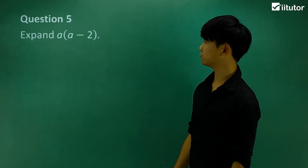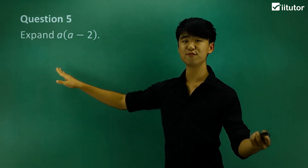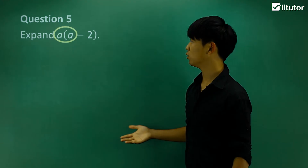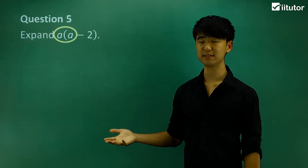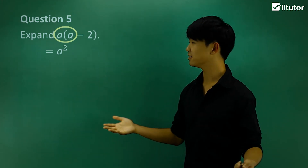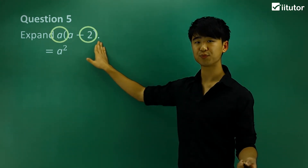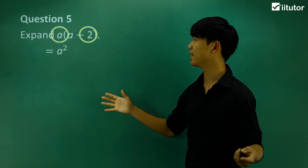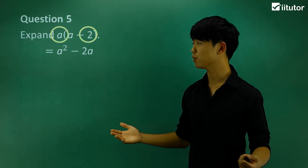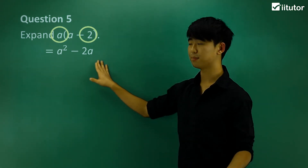In question 5, we expand a(a−2). We multiply the first two terms: a multiplied by a gives a squared. Then a multiplied by negative 2 gives −2a. So the expanded form is a² − 2a. Hopefully this is getting a little bit easier and clearer, because it's not a very hard concept to apply.